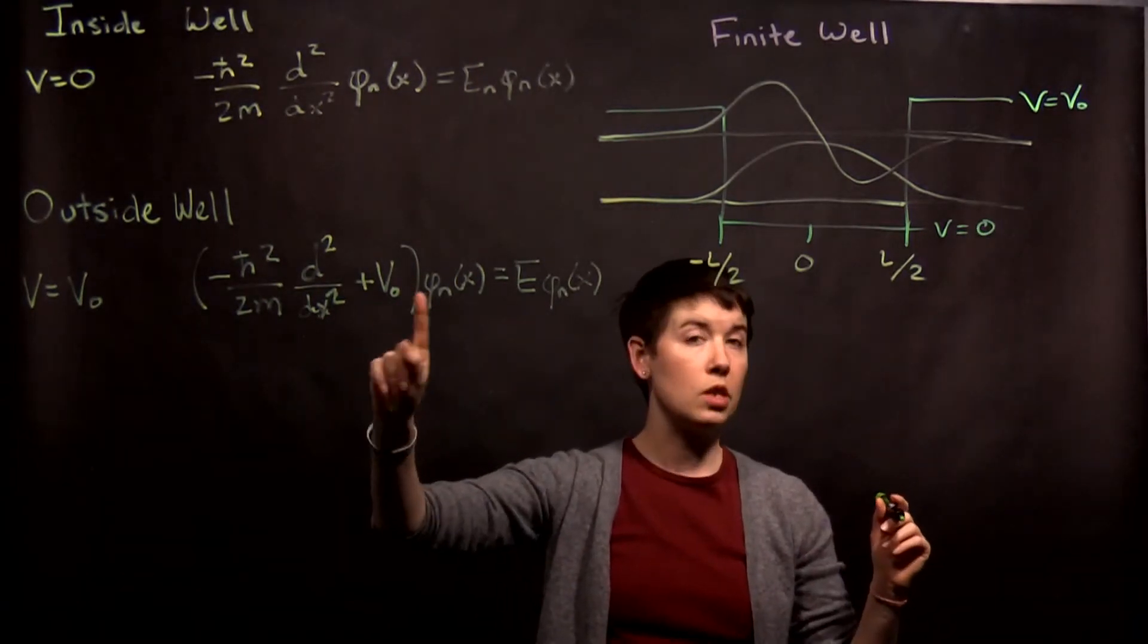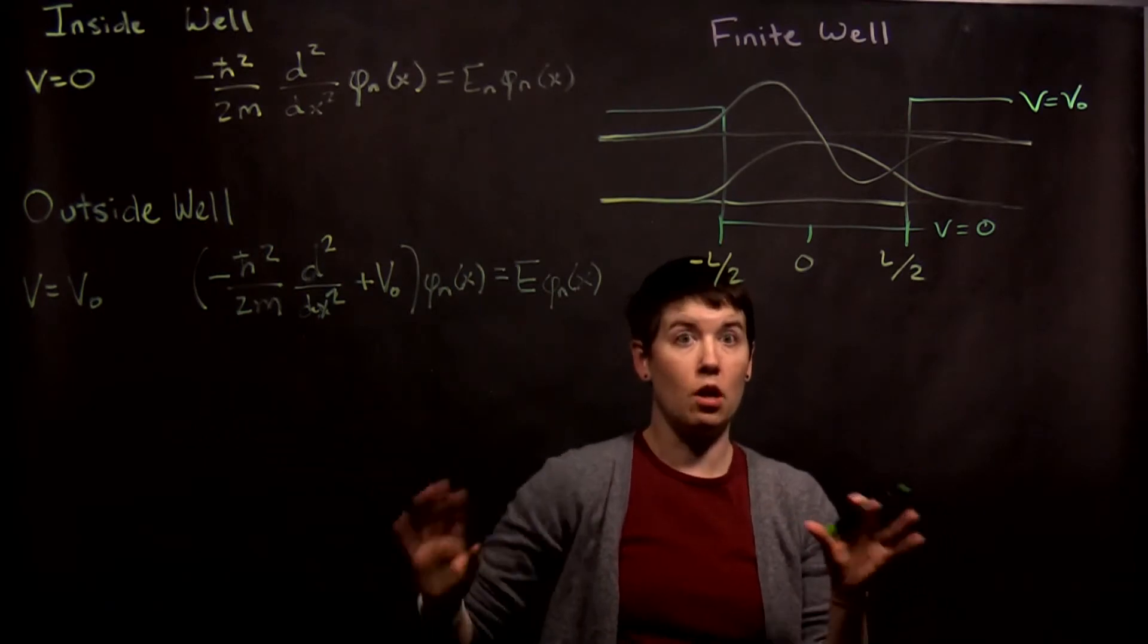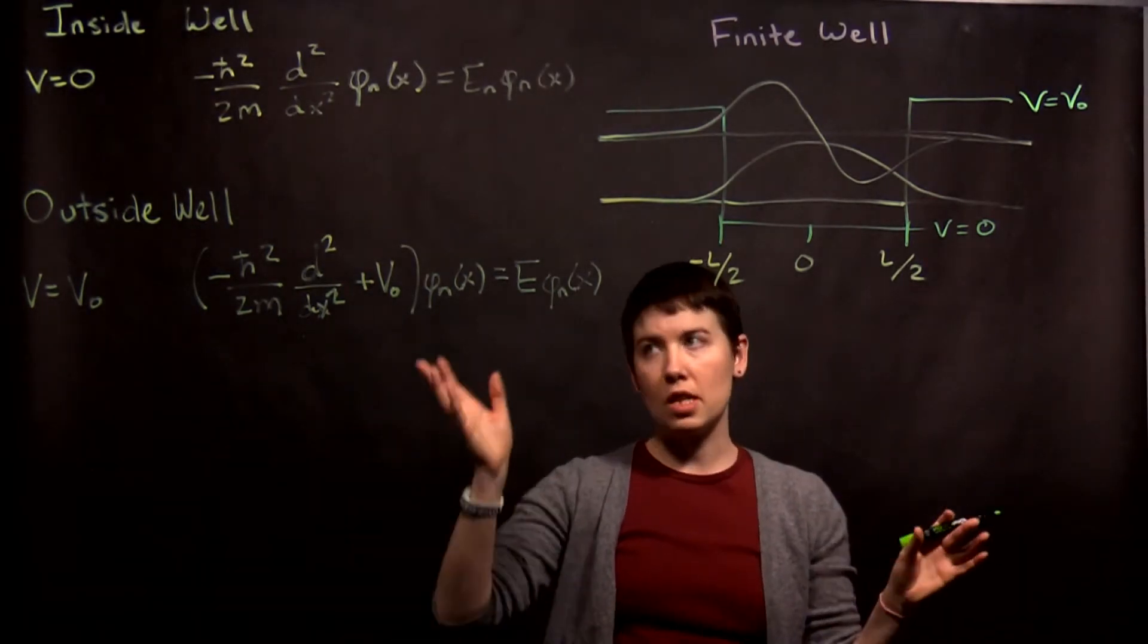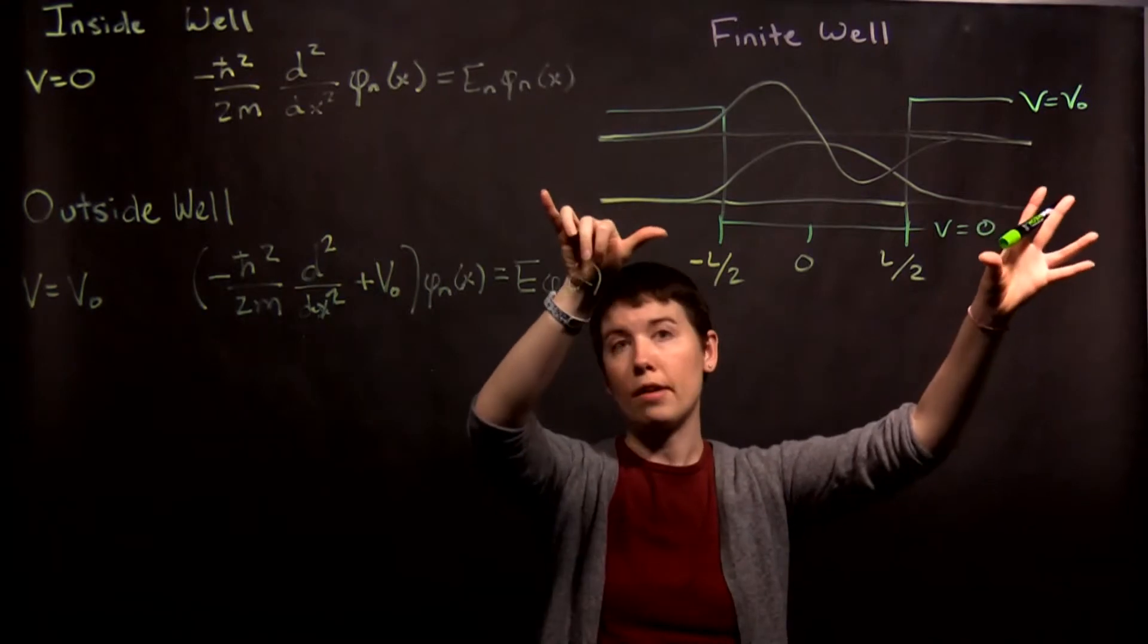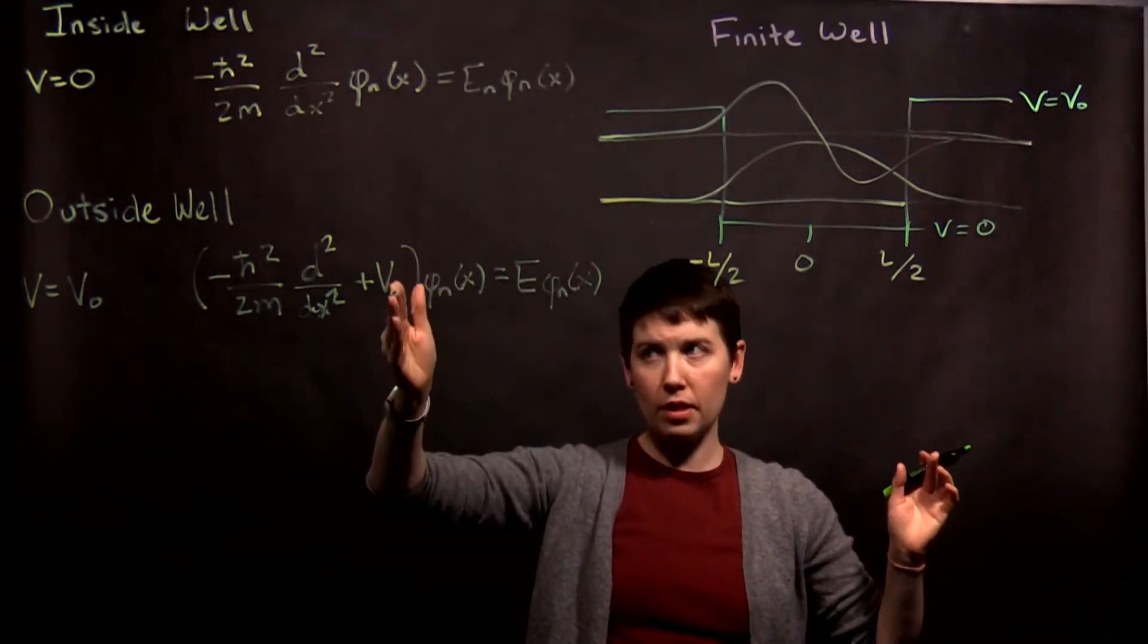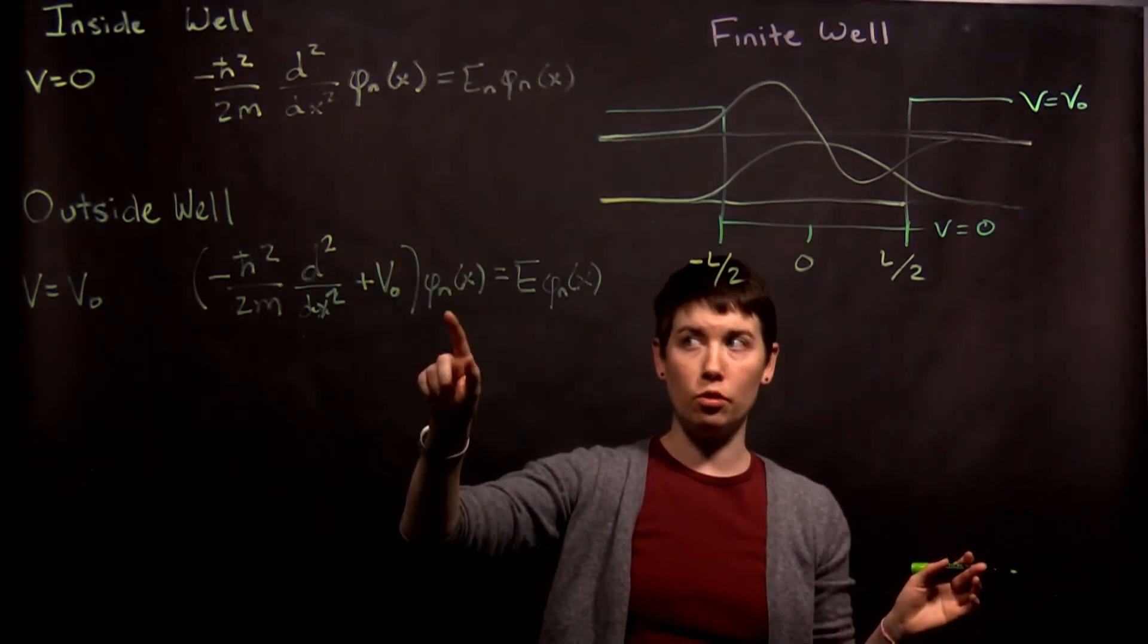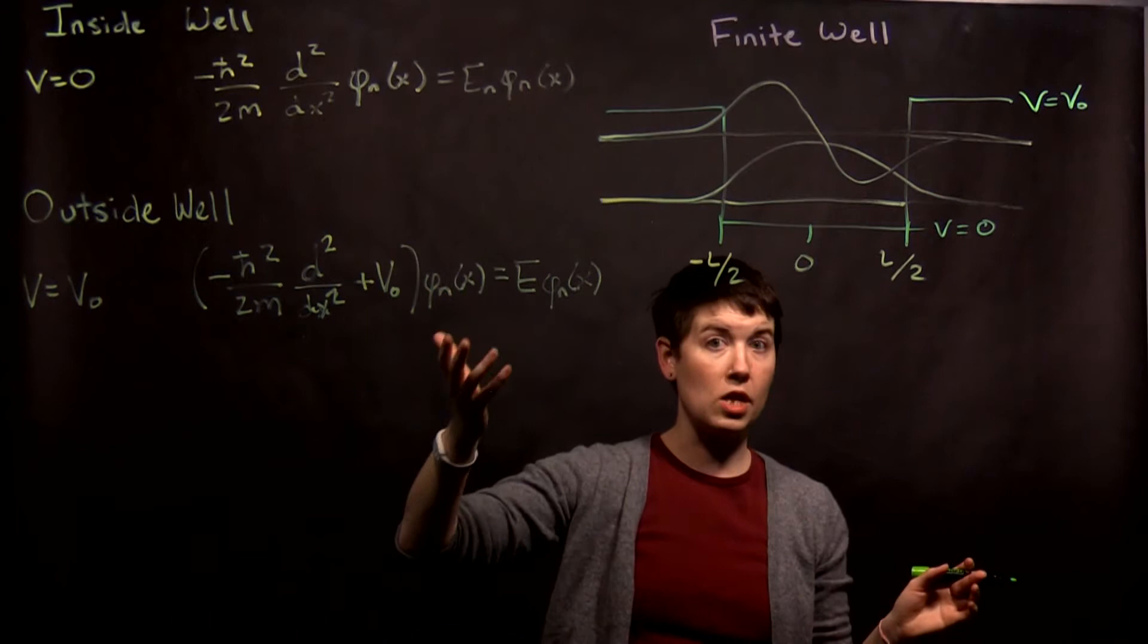Now, this potential term doesn't go away. The good news is, it's not a function of x, it's a constant. And the key is that we're not talking about all values of x, we're only talking about a certain region of x now. So we get to plug in this value, and we're again asking the question, what is the functional form of these energy eigenstates?